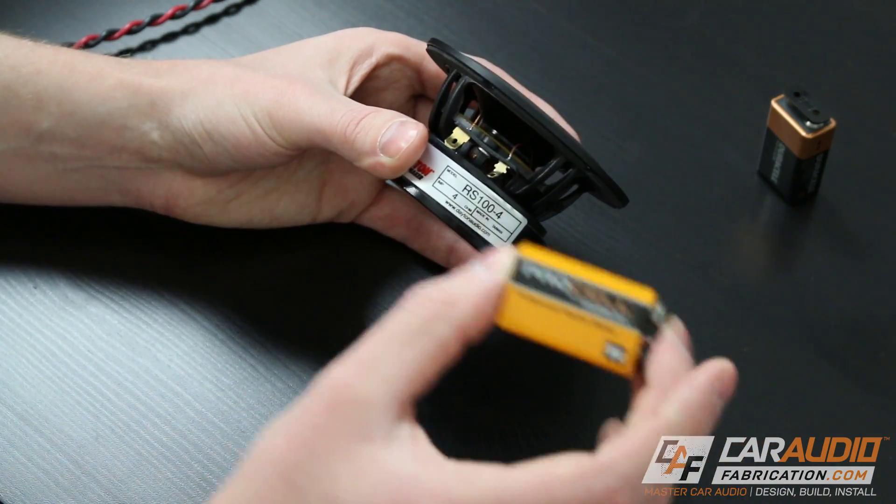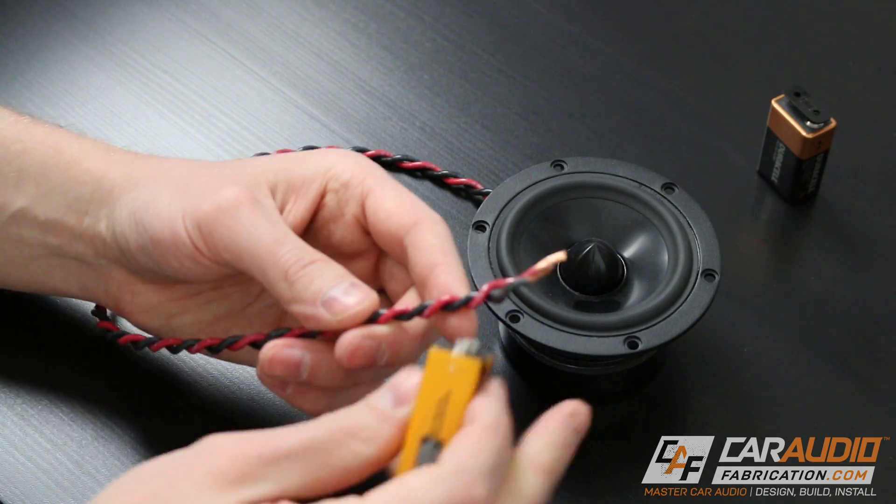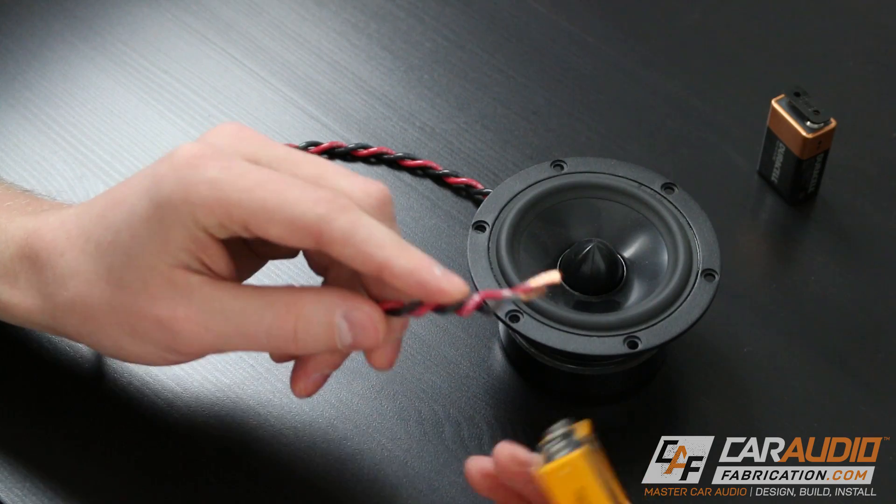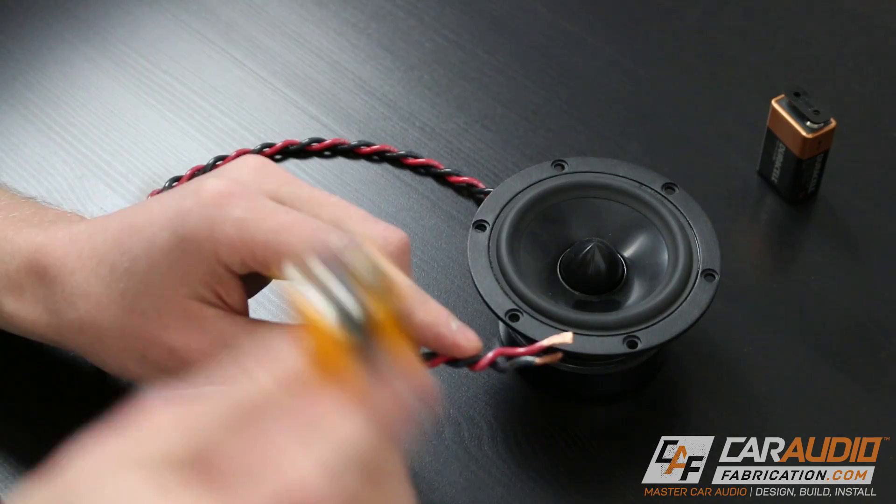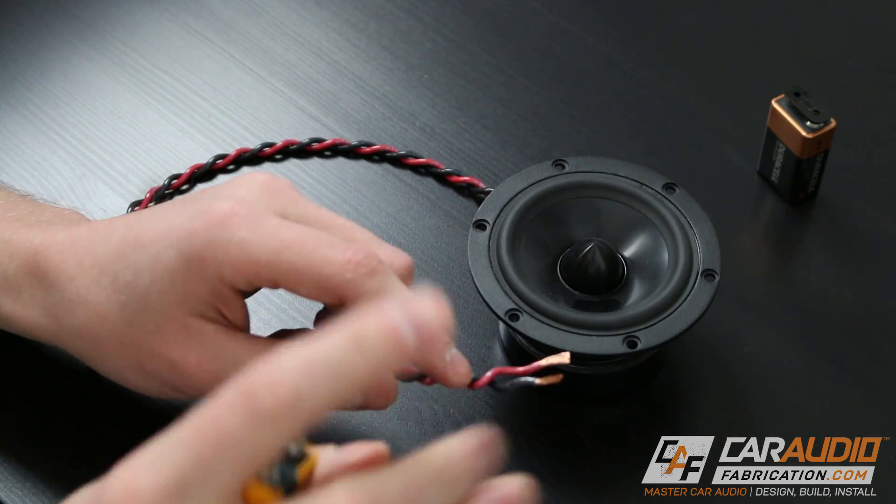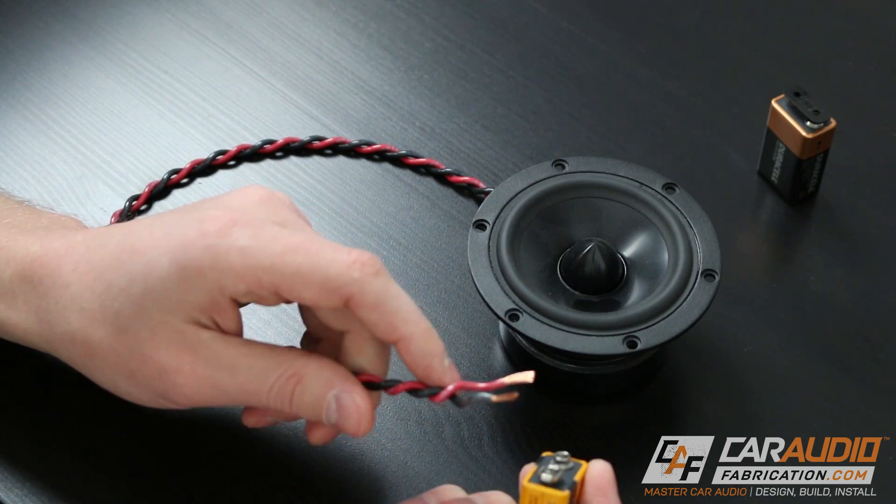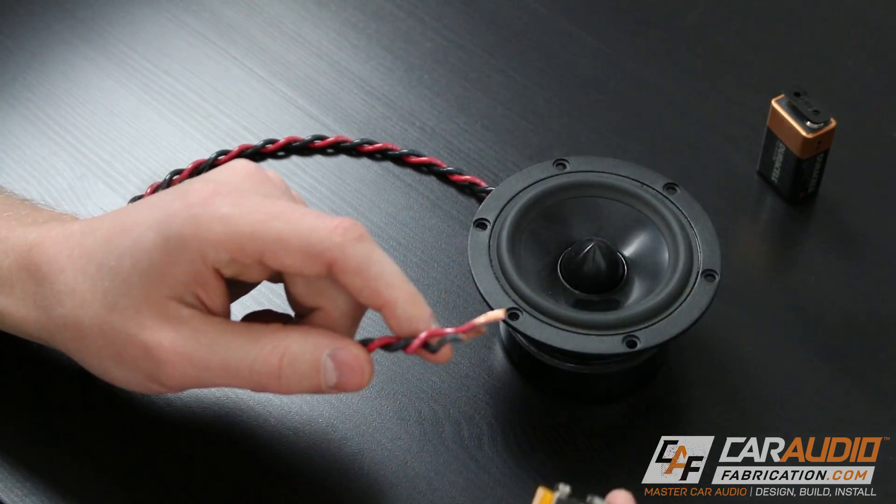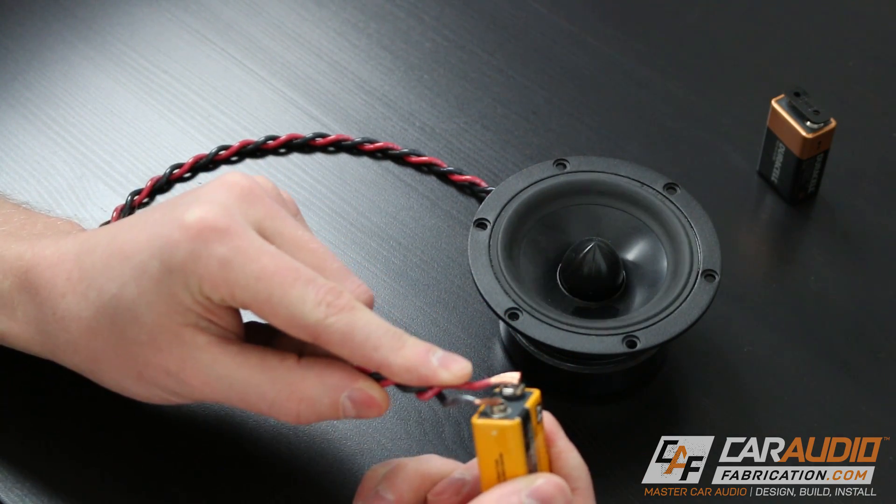Now an example of something that produces direct current is a battery. I've connected speaker wires to the speaker here and if I touch the leads to this battery, you can see that the cone will move. Now because this is direct current, the cone will only move one way and then stay there. So if I put the negative lead on the negative end of the battery and the positive on the positive, you can see that the cone pops out. Whereas if I reverse the polarity, you can see that the cone goes in.